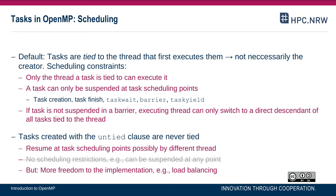When or how might task execution be interrupted? There are so-called task scheduling points. A task scheduling point occurs at the creation of a task and the finish of a task. If a task contains inner tasks, technically the outer task is suspended, the inner task may be executed or put onto the work queue, and eventually the outer task is continued. In the default case, a tied task means the thread that starts executing the task will also finish it, even after suspension at a scheduling point.